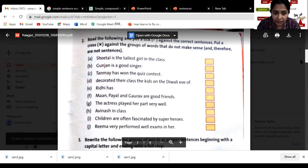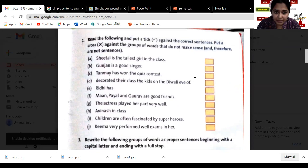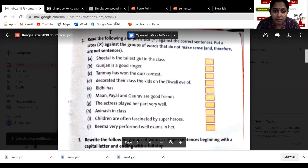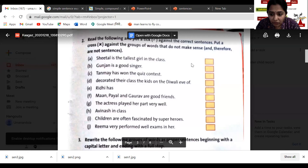When we see some sentences here on the page, read the following and put a tick against the correct sentences, put a cross against the group of words that do not make sense and therefore not a sentence. So let us see. 'Sheetal is the tallest girl in the class' - this is a meaningful sentence, so we can put a correct mark. 'Gunjan is a good singer' - this is also a meaningful sentence. 'Tanmay has won the quiz contest' - yes, it is also sensible.